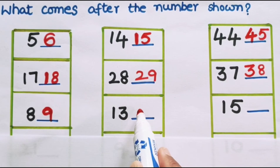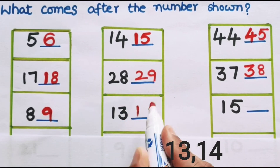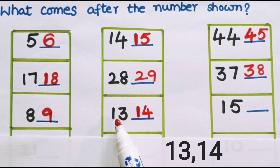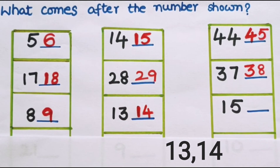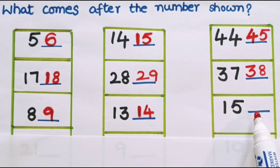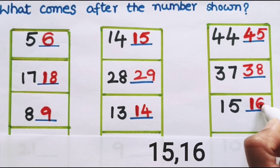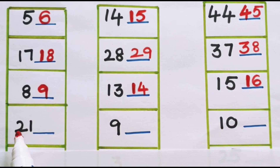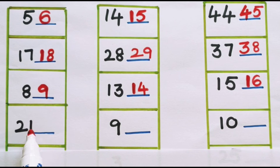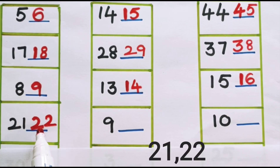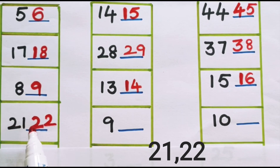After 13, what number comes? Yes, after 13, 14 comes. The tens place value is 1 and in the ones place the number is 3, so after 3, 4 comes. After 13, 14 comes. What is the next number? It is 15. After 15, 16 comes. Next, the number is 21. What number comes after 21? The ones place is 1, and after 1 comes 2. The tens place stays the same. So after 21, 22 comes.